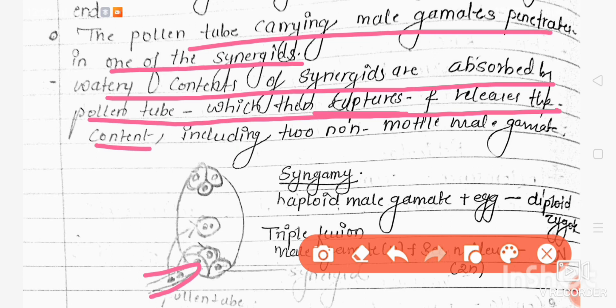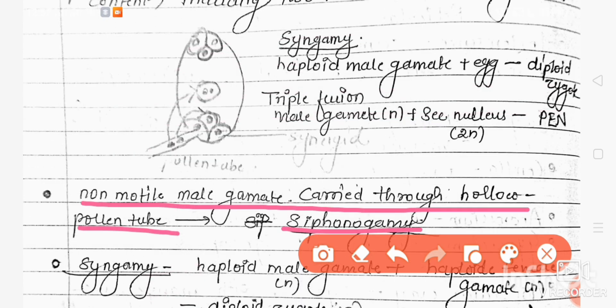These are non-motile male gametes carried through the hollow pollen tube. This is termed as siphonogamy. After the pollen tube reaches the synergids, there are two processes that take place: first is syngamy and second is triple fusion.